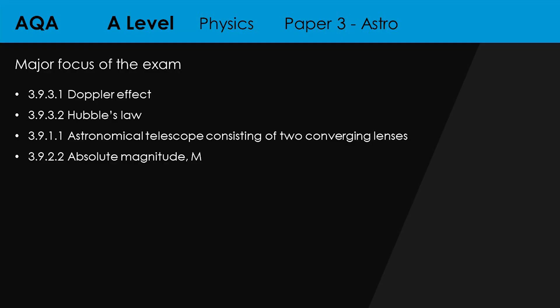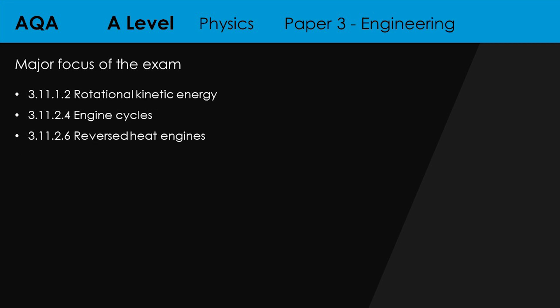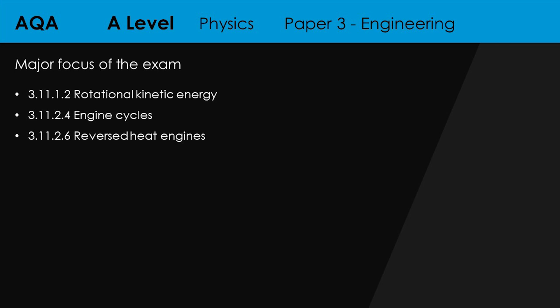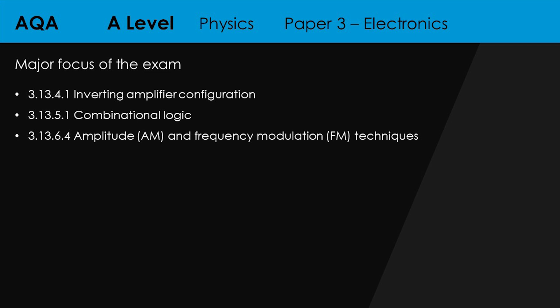When it comes to the options, for astrophysics these are the focus areas if you're doing the space content. For the medical physics module: sensitivity and frequency response, absorption of X-rays — those are the kinds of things giving you higher marks. For engineering: rotational kinetic energy and all of rotational dynamics, plus engine cycles and reversed heat engines. For turning points, a popular option: Millikan's determination of the electronic charge e, the significance of Young's double slit, and mass and energy. And for the few people doing electronics — probably about 10 around the country — inverting amps, combination logic, and AM and FM techniques.